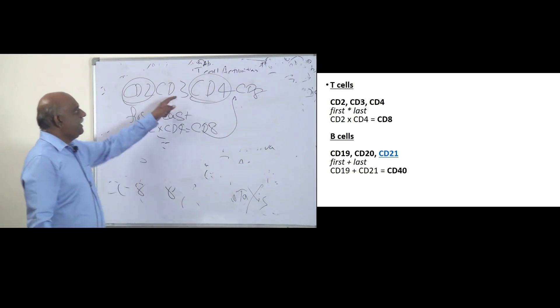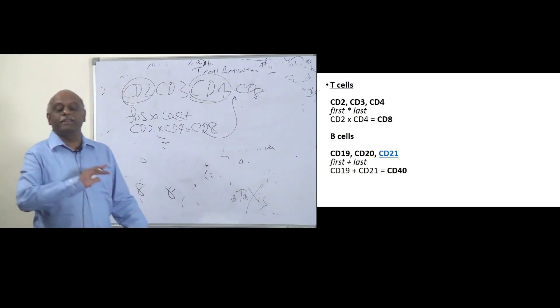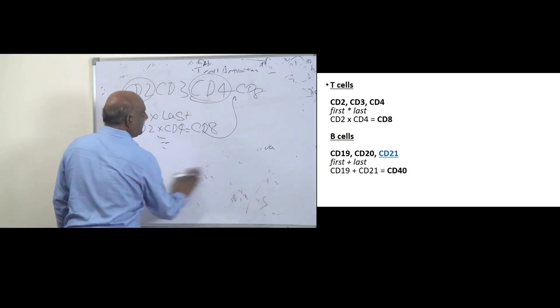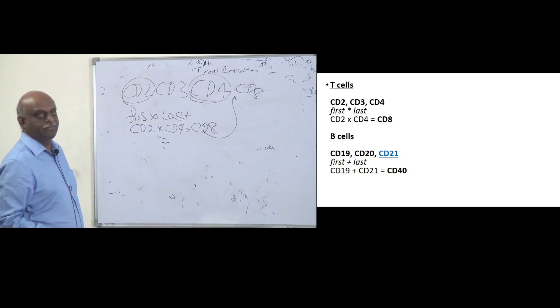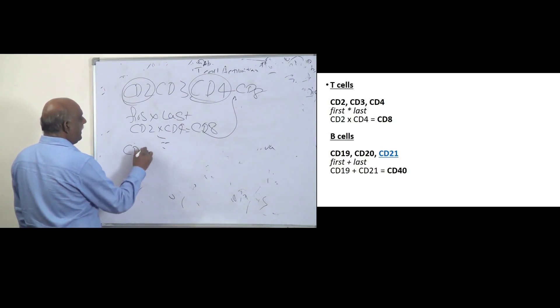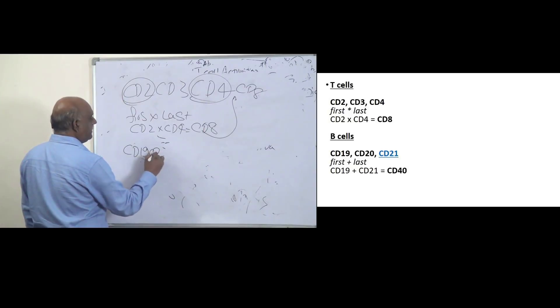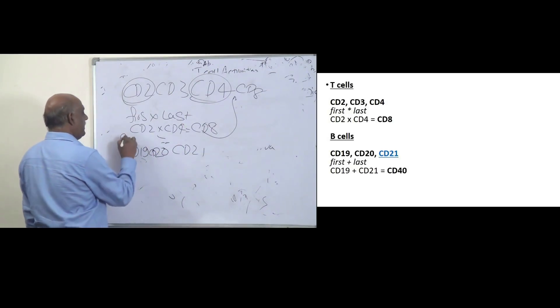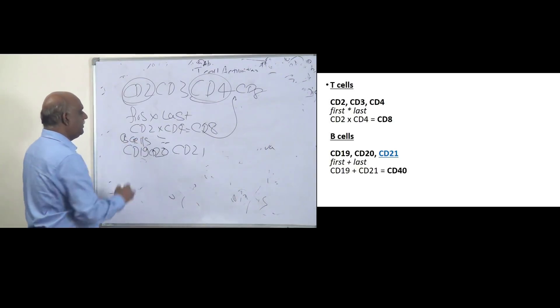So CD2, CD3, CD4, CD8, they are all called T-cell markers. Then about the B-cells, how will you remember? CD19, 20 and CD21, they are B-cells. How will you remember?